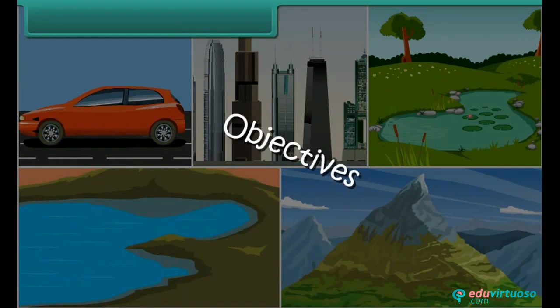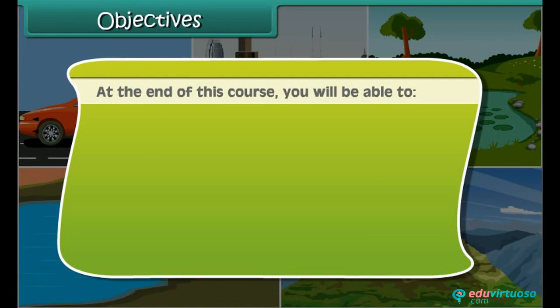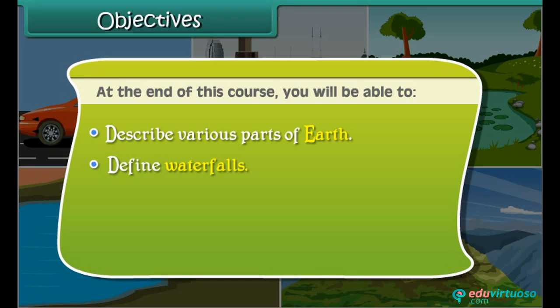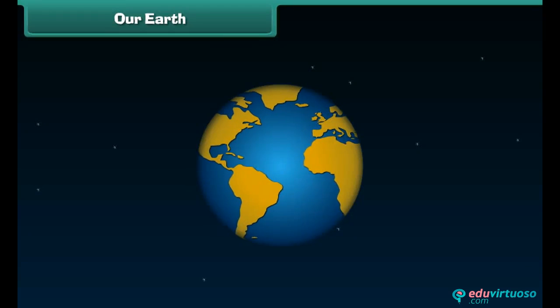Objectives: At the end of this course, you will be able to describe various parts of Earth, define waterfalls, identify hills, mountains, lands, valleys and plains, and list various methods to save our Earth.